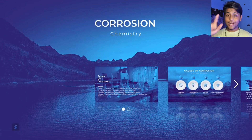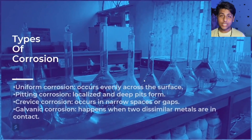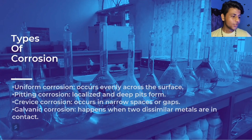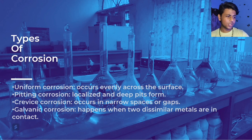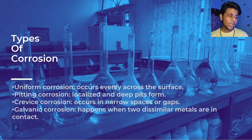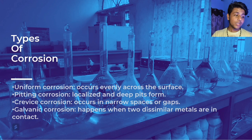This is my first presentation. Types of corrosion: I have noted four types. First, uniform corrosion, which occurs evenly across the surface. Second, pitting corrosion, where localized and deep pits form. Third, crevice corrosion, which occurs in narrow spaces or gaps. Fourth, galvanic corrosion, which happens when two dissimilar metals are in contact.